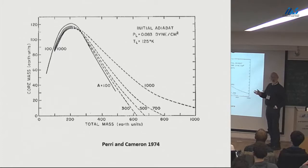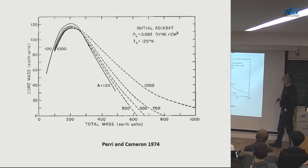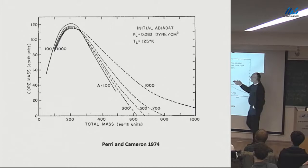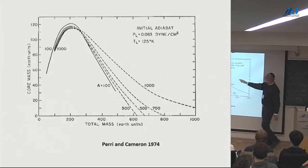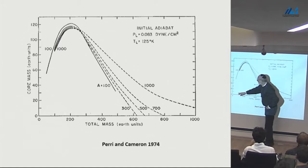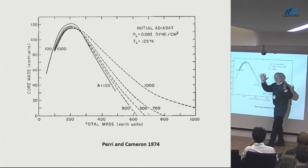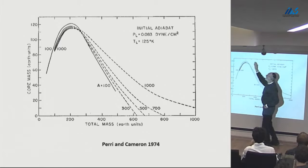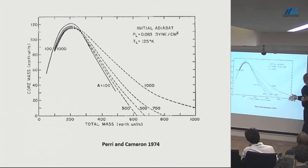How do I add in the atmosphere? Here's an early calculation by Perri and Cameron where they did it using an adiabatic atmosphere. The A parameter is really the distance from the sun, and the solutions are not very different for different distances — it's not very sensitive. Here you have the total mass of the body and here the core mass. For core masses of around 60 Earth masses you get something like 60 Earth masses total — a small atmosphere. As the core mass increases it influences the gas around it, and then eventually it turns over. The argument was this is a critical core mass: once you get to 120 Earth masses, the atmosphere collapses. That's a really big number.